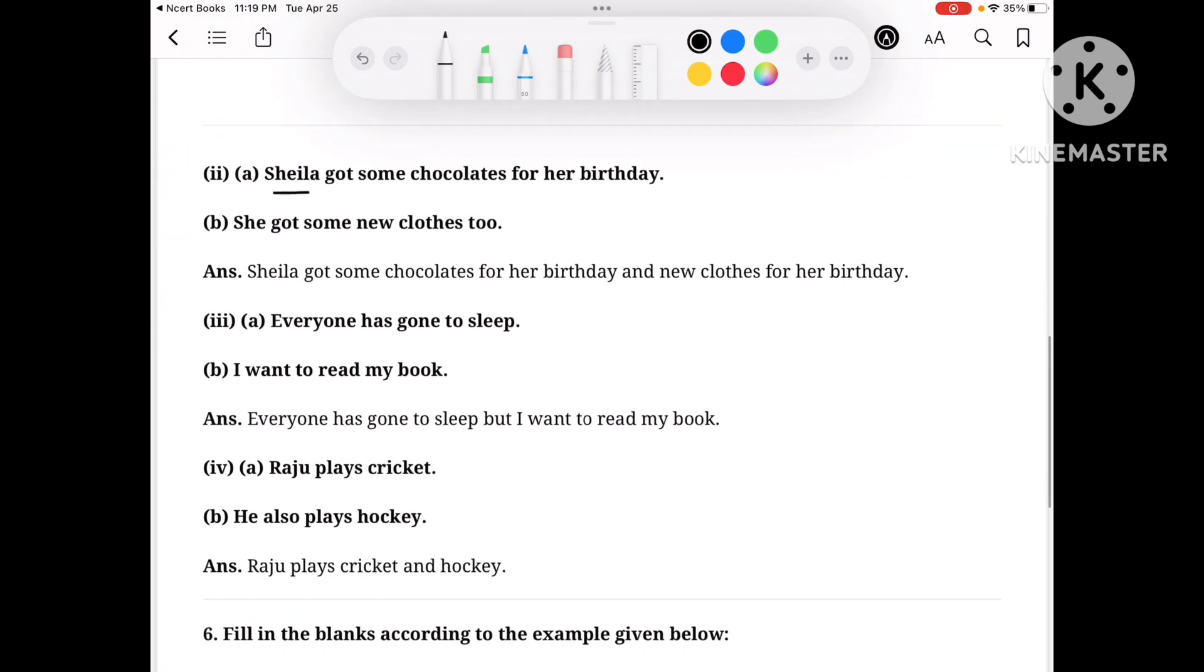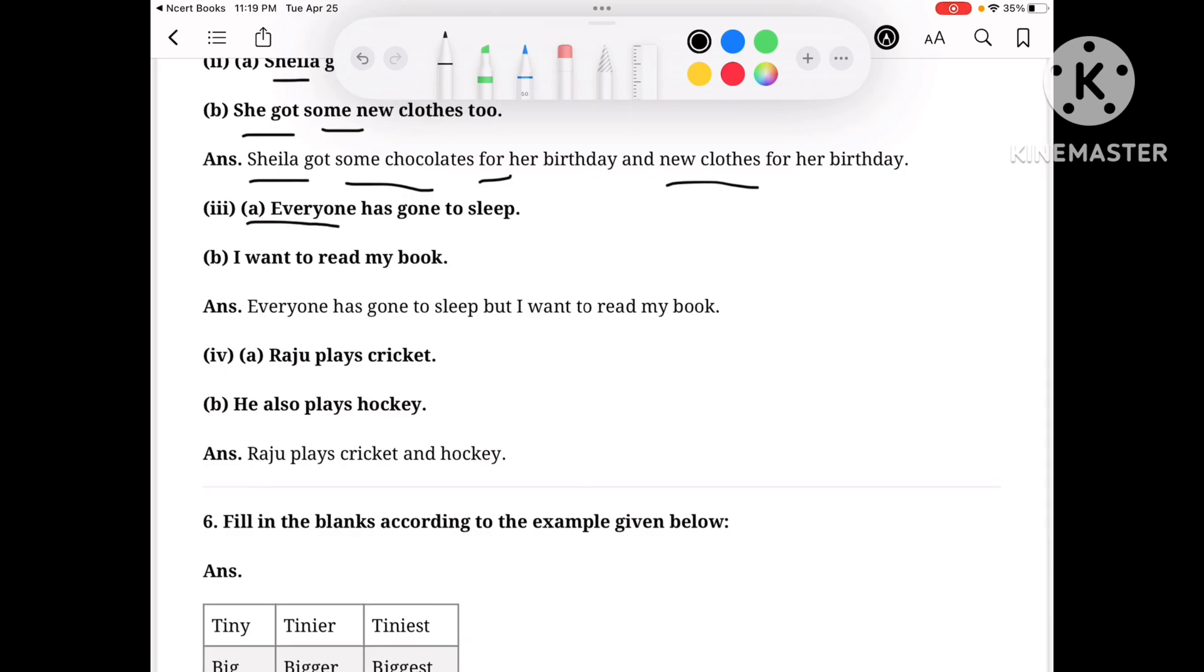Next: Sheila got some chocolates for her birthday, and she got some new clothes too. So we will use 'and': Sheila got some chocolates for her birthday and new clothes.